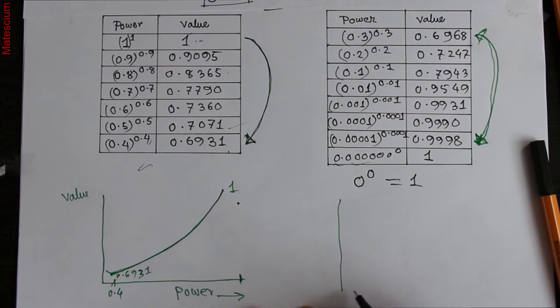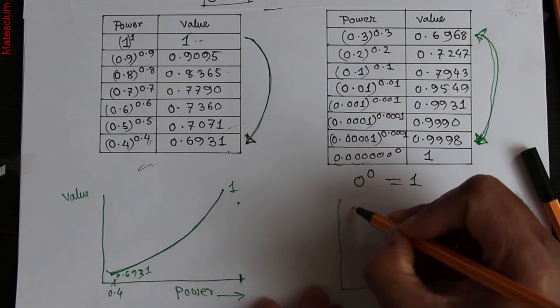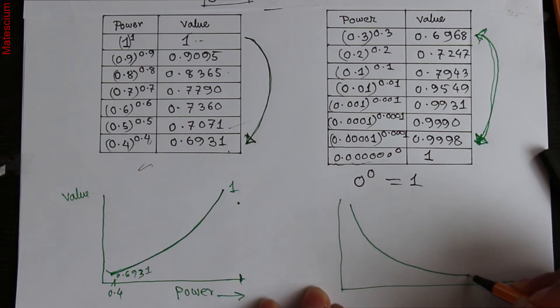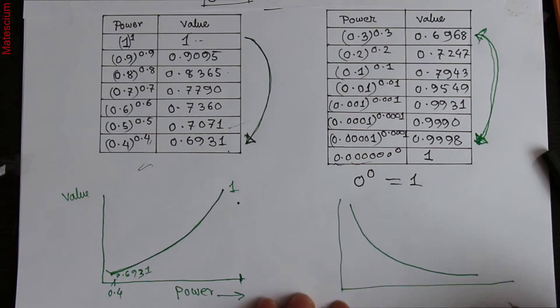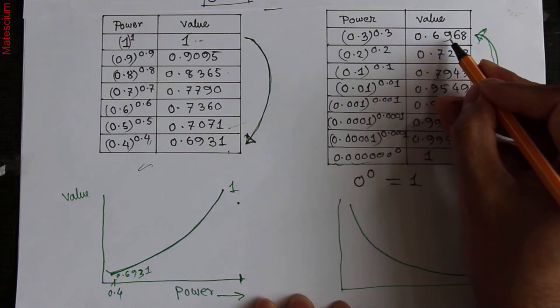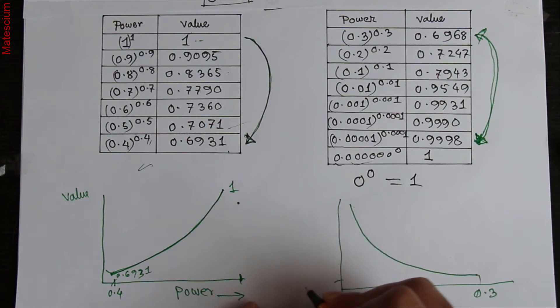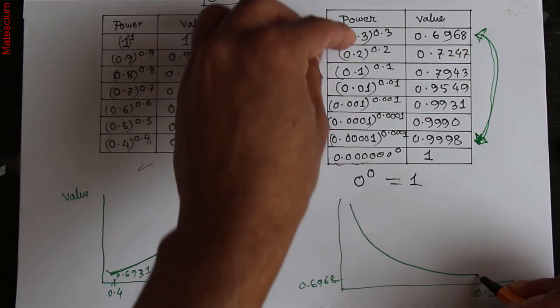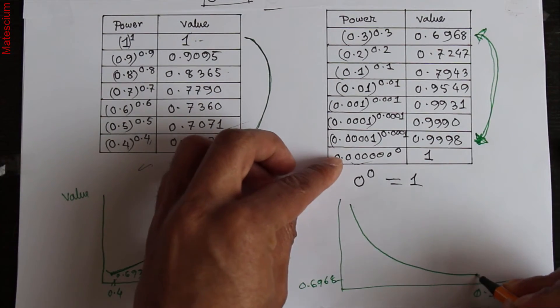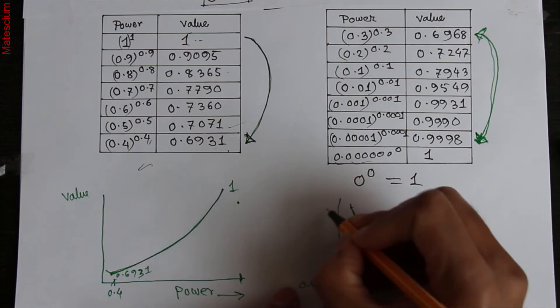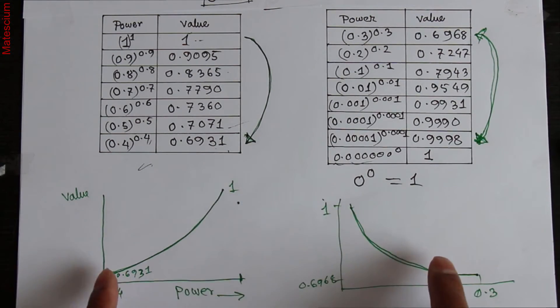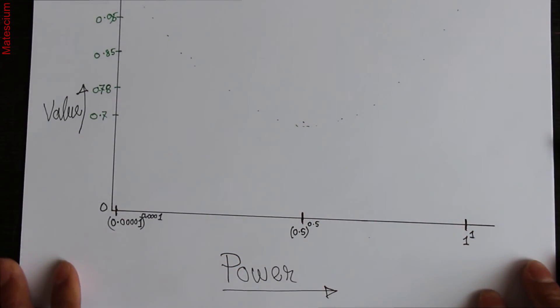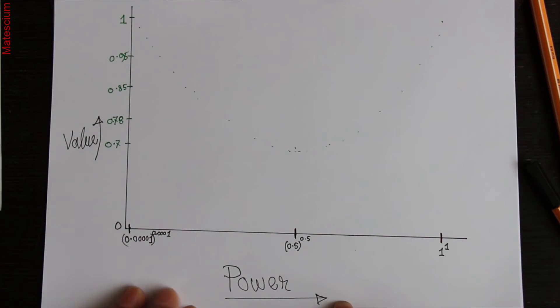Similarly, if I draw this graph, it will be like this way. It's gradually increasing. I started here at 0.3 to the power 0.3, and this value was 0.6968. And if I decrease the power, then this value gradually increases up to 1. If I combine together, it will be like this way. Power is X-axis and Y-axis is the power value.